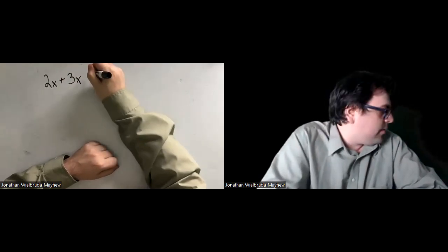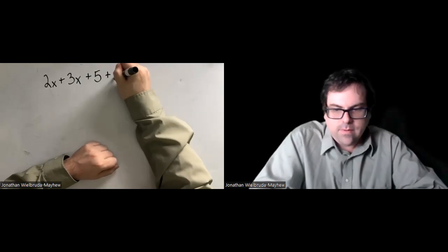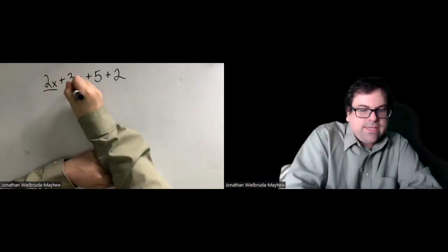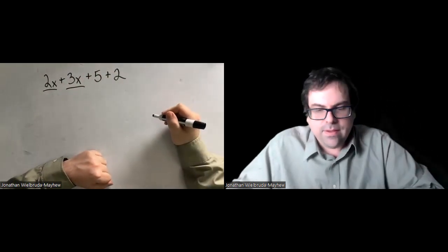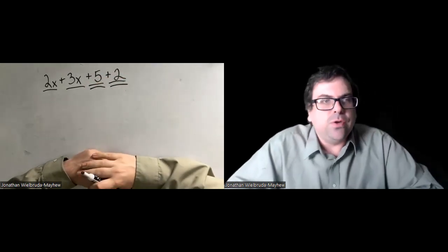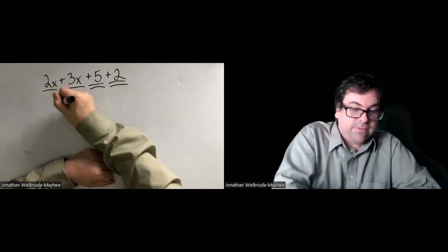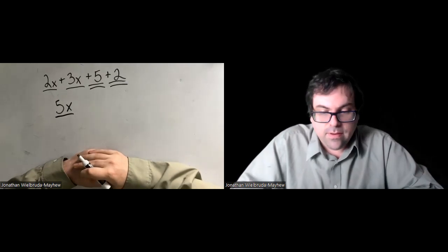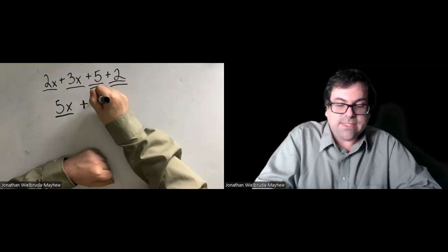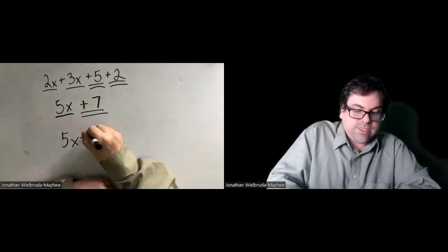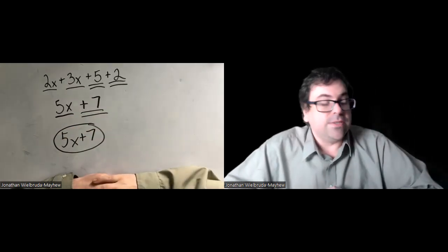Let's look at some more complicated expressions. Simplify by combining like terms where we can. 2x plus 3x plus 5 plus 2 — 2x and 3x are like terms, and positive 5 and positive 2 are like terms. 2x plus 3x: 2 of them plus 3 of them is 5 of them. Positive 5 plus 2 gives us positive 7. The answer here would be 5x plus 7.